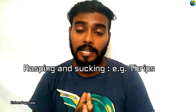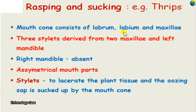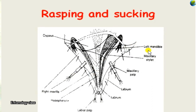The next Haustellate mouthpart without the actual stylet is the rasping and sucking mouthpart, exemplified by thrips. This mouthpart has a mouth cone produced from the labrum, labium, and maxillae. There are three stylets formed: one from each of the two maxillae and one from the left mandible only, since the right mandible is absent. So totally three stylets are formed inside the mouth cone.